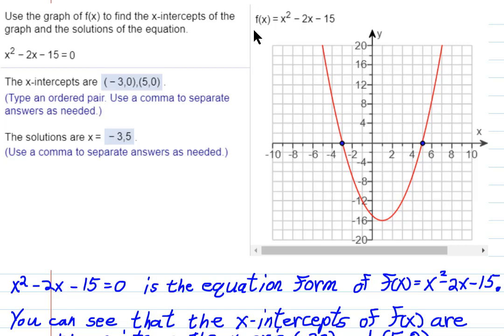Here you're given a function. It's a quadratic function. f(x) = x² - 2x - 15. The equation version of that is x² - 2x - 15 = 0.